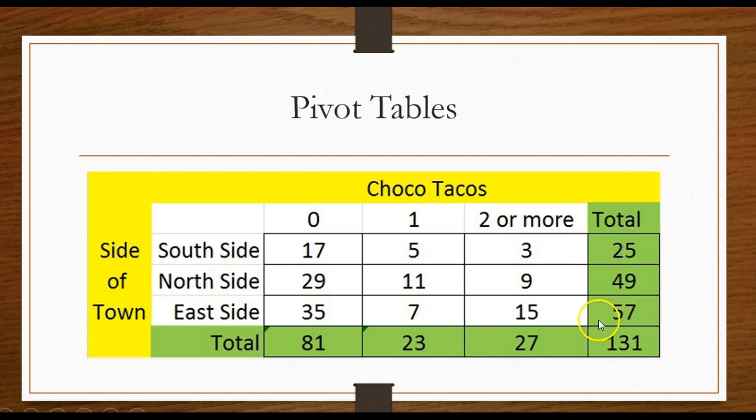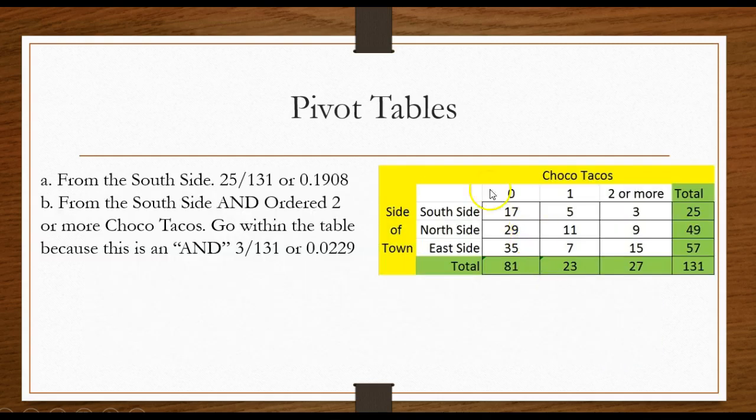So I know there were 131 customers here. What's the probability that a customer is from the south side? Well there were 25 total customers from the south side. So it would be 25 out of 131, or the decimal form 0.1908.